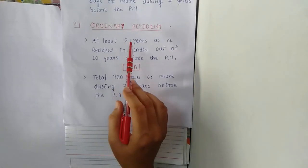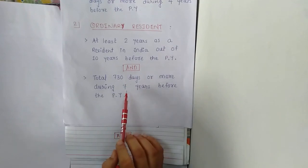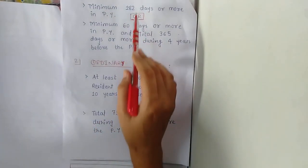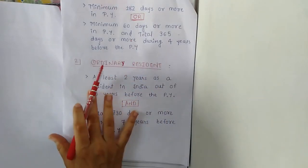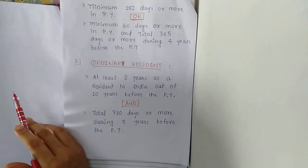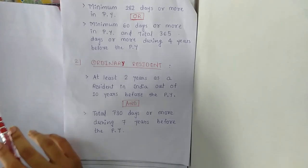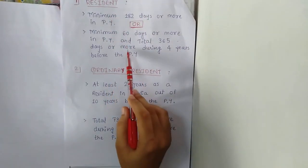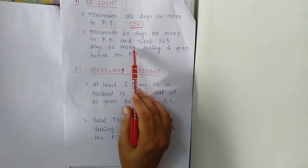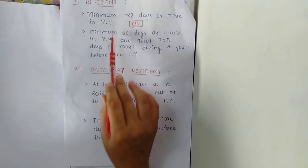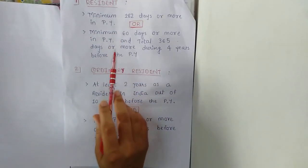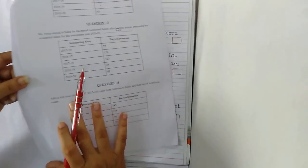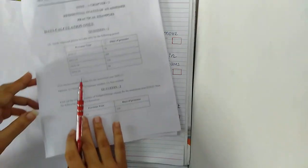In case of ordinary resident, both conditions must be satisfied, whereas in case of resident, either of the conditions needs to be satisfied. The third status is non-resident. An assessee will be considered non-resident when not even one condition of resident is satisfied.